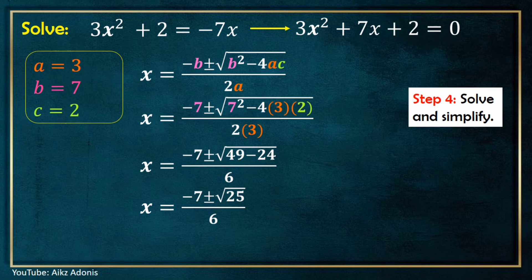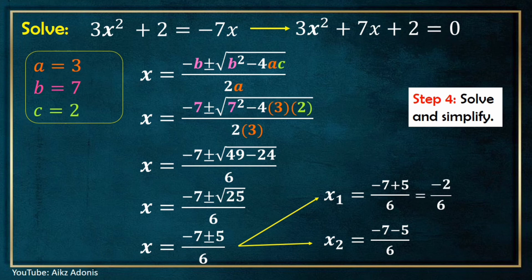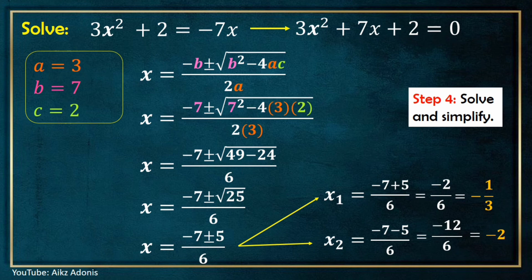Square root of 25 is a perfect square, so we can simplify it. Square root of 25 equals positive or negative 5. Now let's split this equation into two: x sub 1 equals negative 7 plus 5 all over 6, and x sub 2 equals negative 7 minus 5 all over 6. Negative 7 plus 5 is negative 2, and negative 2 divided by 6 is negative one-third. So the first value of x is negative one-third. Negative 7 minus 5 is negative 12, and negative 12 divided by 6 is negative 2. So the second value of x is negative 2.